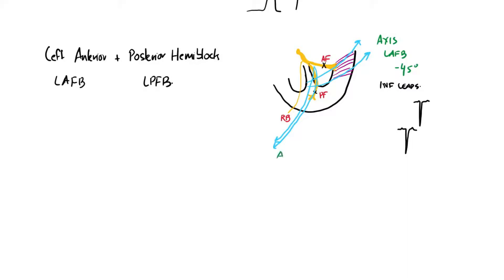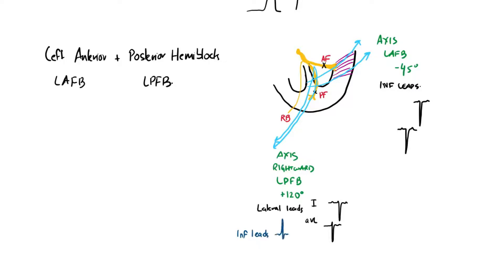Similarly, if we block the posterior fascicle, there is no current flowing into the rightward side of the heart, so the anterior fascicle is now responsible for depolarizing the right side. As a result, you get right axis deviation with an axis more positive than +120 degrees. You will see predominantly negative complexes in leads I and aVL, and positive complexes in the inferior leads, which signifies right axis deviation.